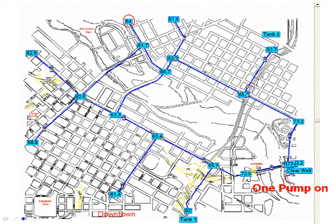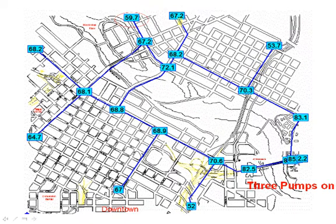For example, with one pump on, we had a pressure up here of about 54 PSI and a little flow going into the tanks. If you put three pumps on, you increase the pressure all over the system and greatly increase the flow rates into the tanks. The point is it's very, very simple to run that analysis — all you have to do is drop down the list and select as many pumps as you want.